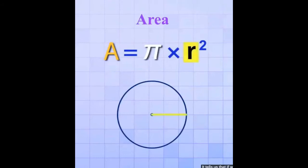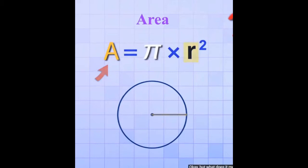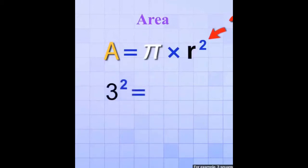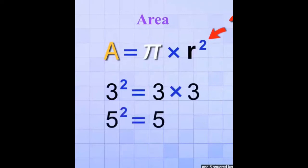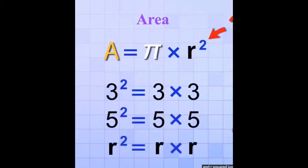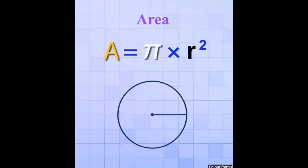This is a pretty simple formula too. It tells us that if we know the radius, we just have to square it and then multiply that times pi to get the area. But what does it mean to square the radius? Squaring a number just means multiplying it by itself — for example, 3 squared means 3 times 3, and 5 squared means 5 times 5. So R squared just means R times R.